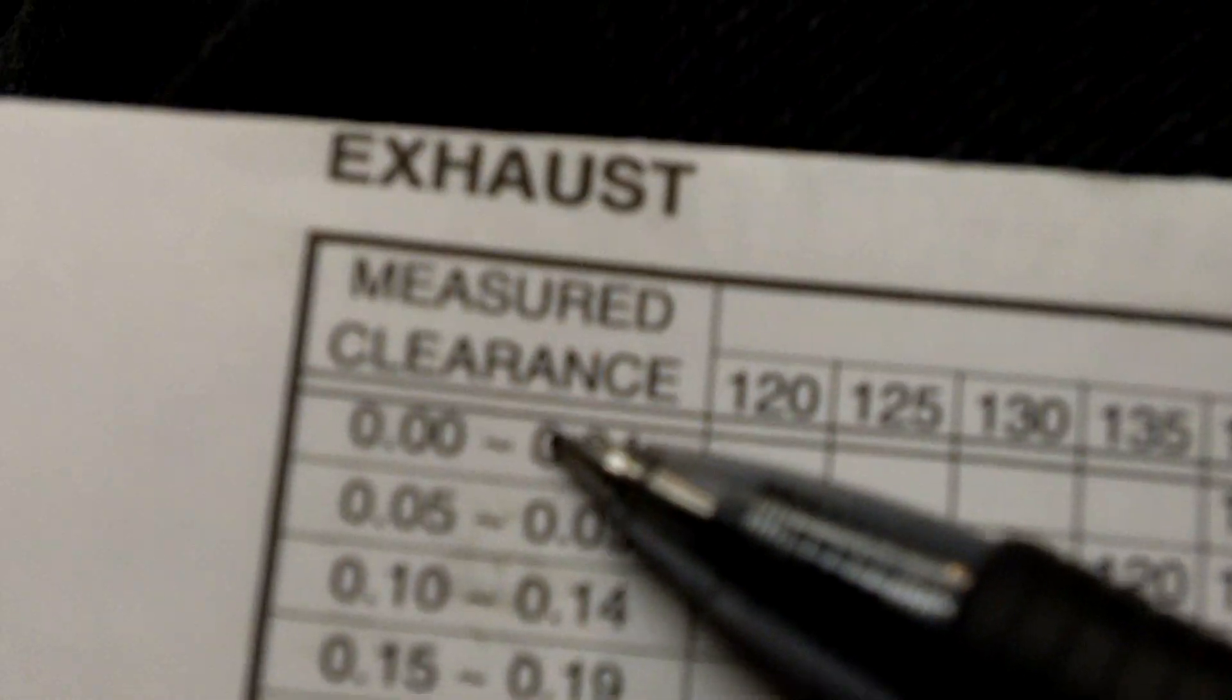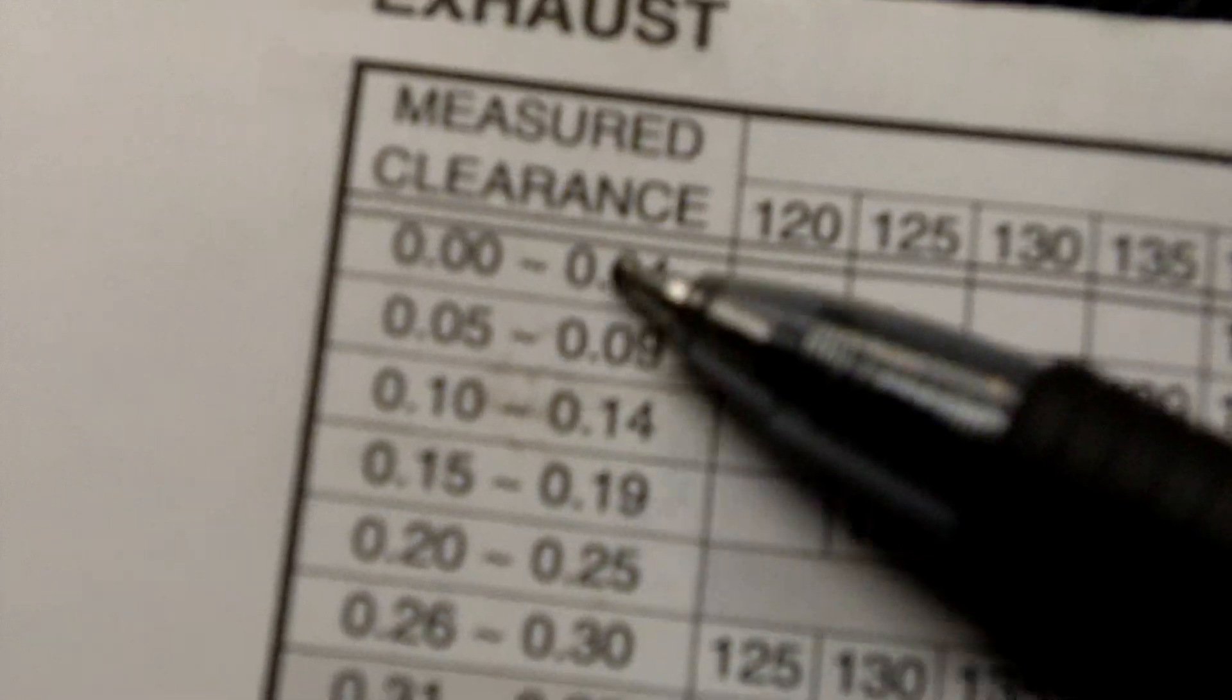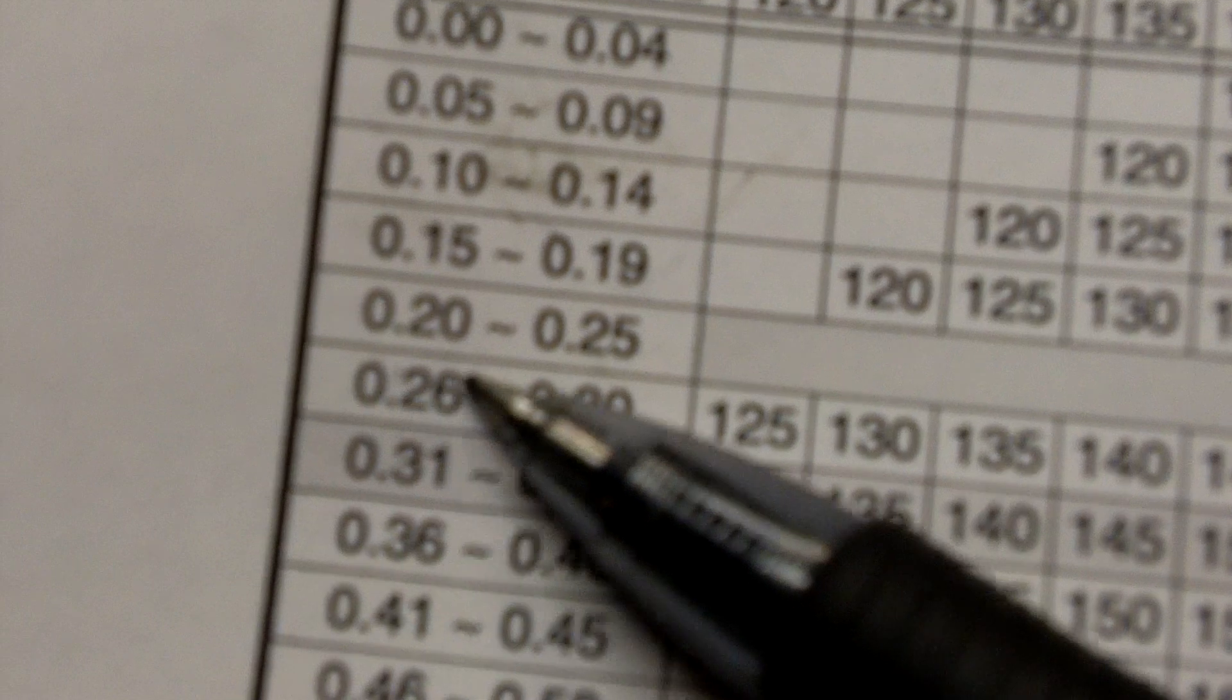What I usually do is I'll write down the shim number if the number isn't on it already. And then you can go to the Yamaha cheat chart here to figure out your tolerance, which we said that this one was .29. And on the side here, in the cheat chart, I'm just going to show exhaust measured clearances. So we're going to find .29, and here's a range here that has .29. You see here .26 to .30.